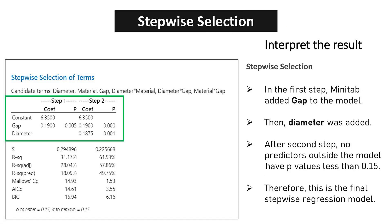Minitab's iterative process in stepwise Selection demonstrates its ability to fine-tune models, leading to a refined set of predictors that capture essential dynamics. In the first step, Minitab added gap to the model. Then Diameter was added. After the second step, no predictors outside the model have p-values less than 0.15. Therefore, this is the final stepwise regression model.